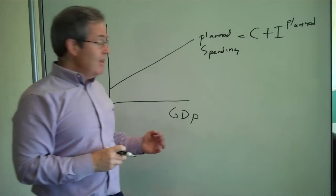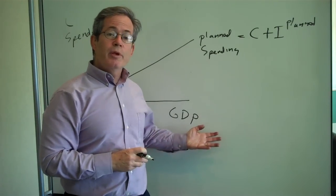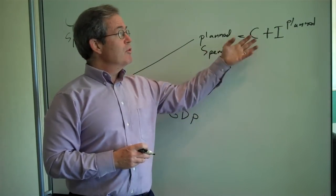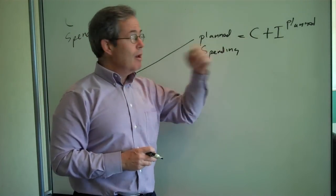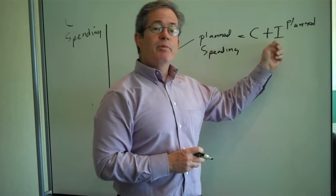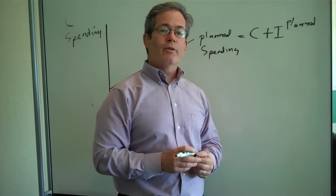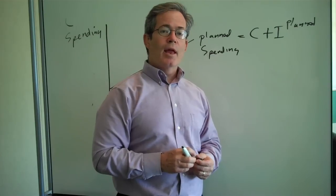And what it says is that as income or GDP goes up, people plan to spend more. Consumers will spend more because their income has gone up and businesses plan to invest more, build more factories, have more plant and equipment.